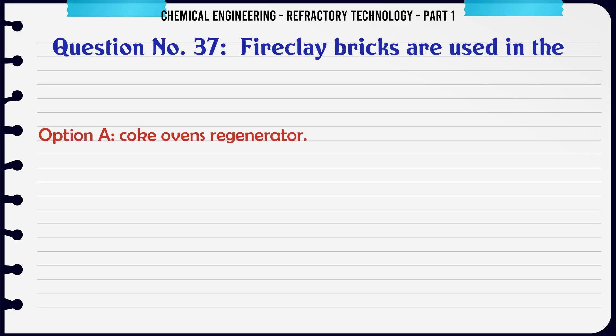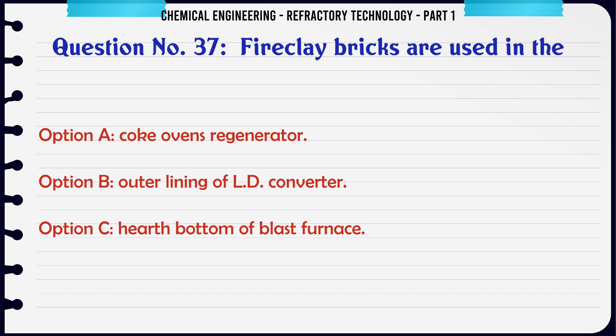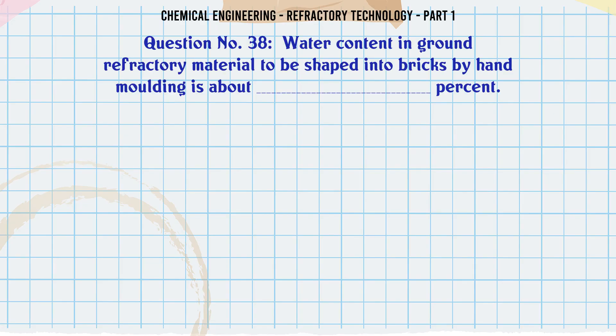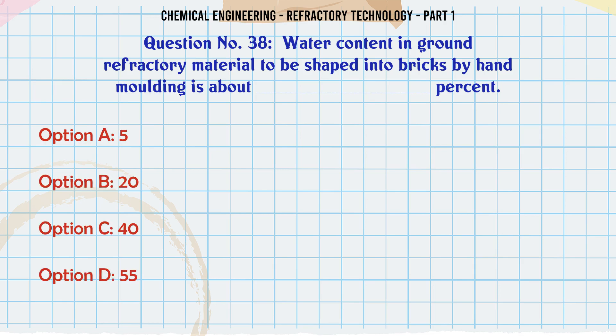Fire clay bricks are used in the: A. Coke oven regenerator, B. Outer lining of LD converter, C. Hearth bottom of blast furnace, D. Coke oven walls. The correct answer is Coke oven regenerator.